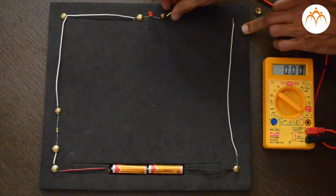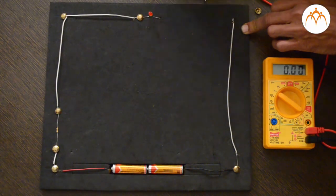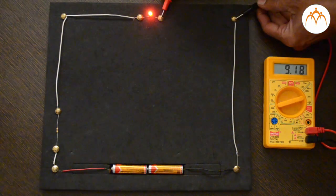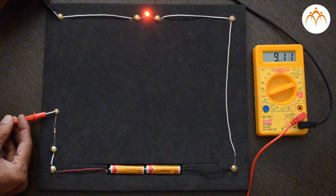Current is measured by connecting the multimeter in the circuit. We will remove one part and connect the multimeter at that location. Current flowing through this point is 9.1 milliampere, while current flowing through other location is 9.1 milliampere. This is in line with the fact that for series circuits, current flowing through the circuit is same everywhere.